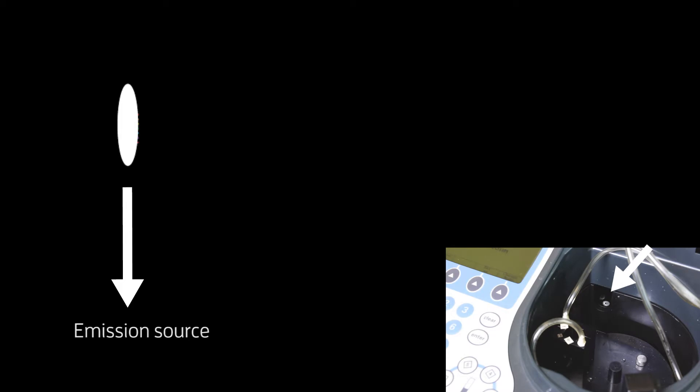Firstly we have an emission source. This produces light upon which the entire technique depends. It must be stable and bright across the range of wavelengths required in order that false readings due to inherent variation don't occur. Emission sources include tungsten and halogen lamps for example.